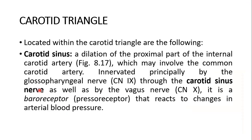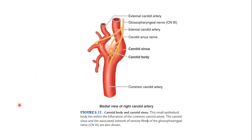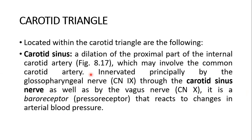I have to tell you about the carotid sinus and the carotid body. What is the carotid sinus? It's a dilatation of the proximal part of the internal carotid artery, which may involve the common carotid artery. It is innervated principally by the glossopharyngeal nerve, the ninth cranial nerve, through the carotid sinus nerve, as well as by the vagus nerve, the 10th cranial nerve. It is the baroreceptor — pressure receptor — that reacts to changes in the arterial blood pressure.